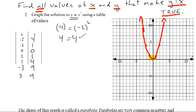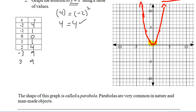The shape of this graph is called a parabola. And parabolas are really common in nature and man-made objects. So if you throw a ball through the air, it will trace a parabola through the air. If you have a satellite dish, that will be in the shape of a parabola. So pretty useful stuff.